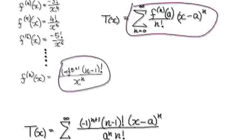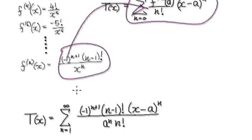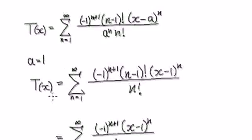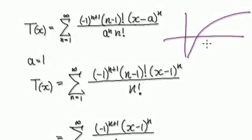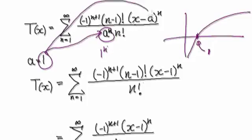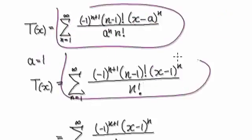From here, putting this in takes us to here. Now we need to evaluate at a equals 1, because for natural log we are centering it at 1. So put 1 into a — this means a to the power of n becomes 1 to the power of n, which is 1. Putting 1 into this a, the whole thing becomes this.